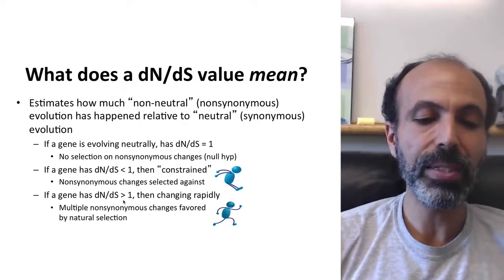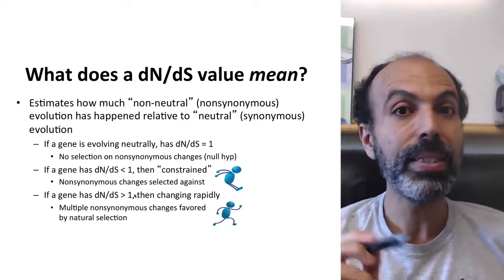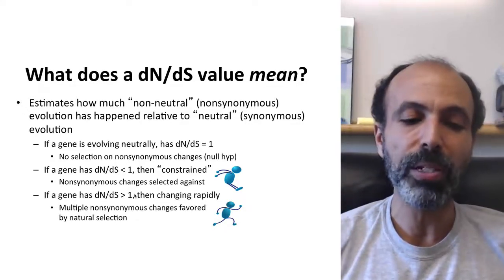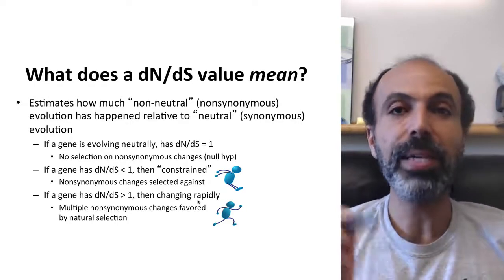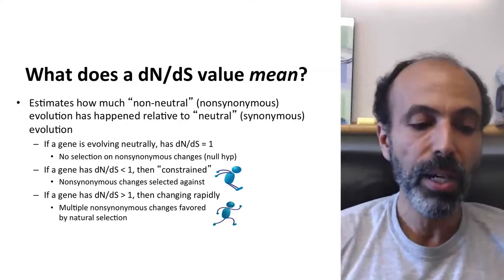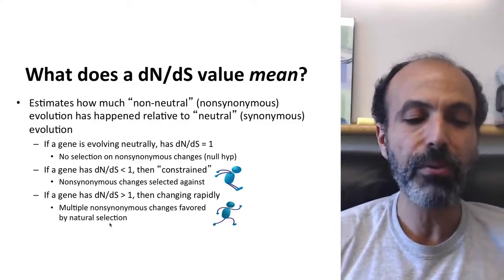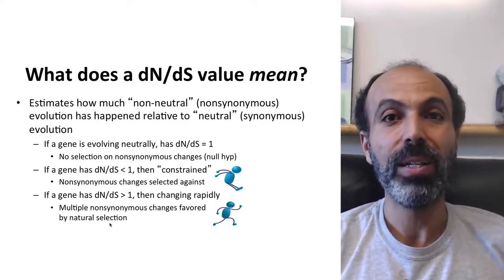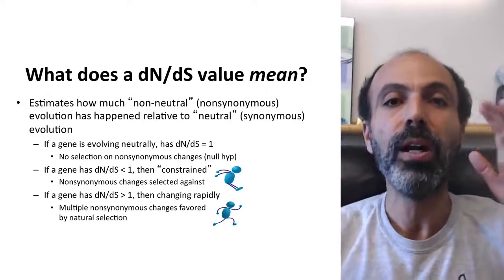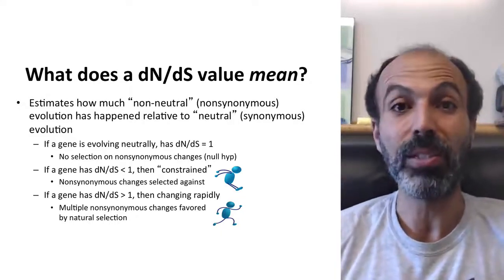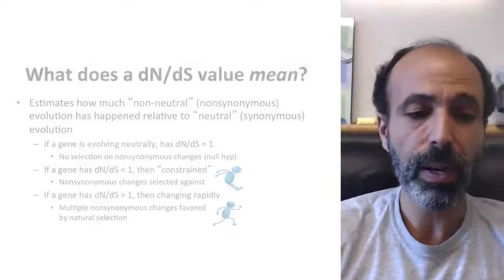You can also have dN/dS greater than one. This is less common, but quite interesting. What happens in this case is you're having very rapid changes, that basically within a single gene, you're having multiple non-synonymous changes favored by the action of natural selection. That's really cool when you see that, and that is very strongly indicative of strong recurrent positive selection.